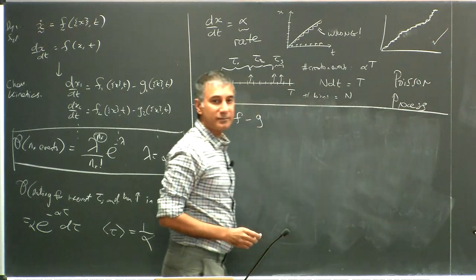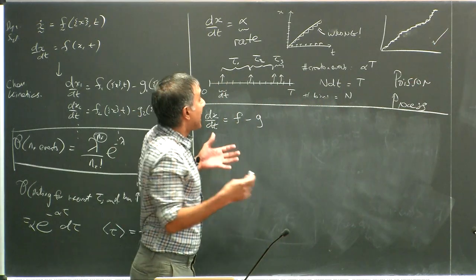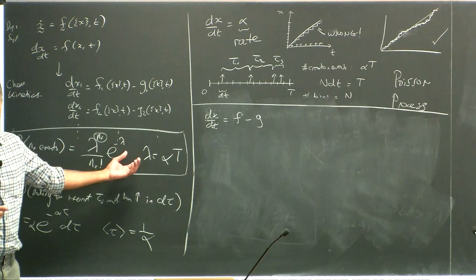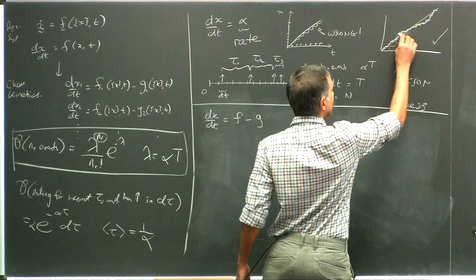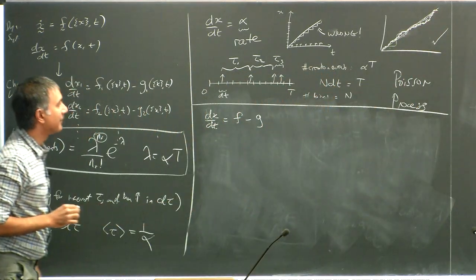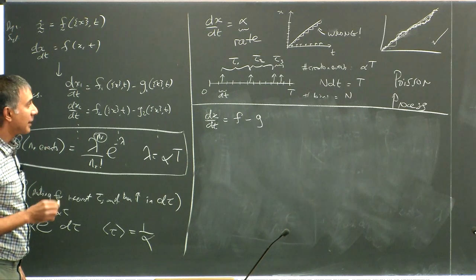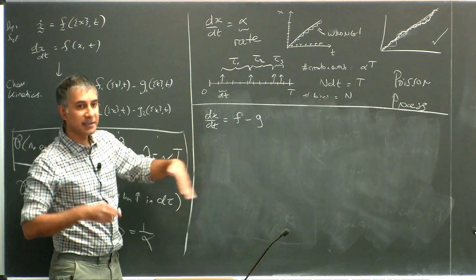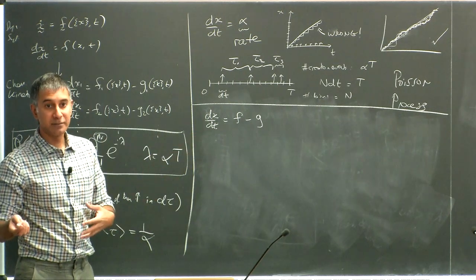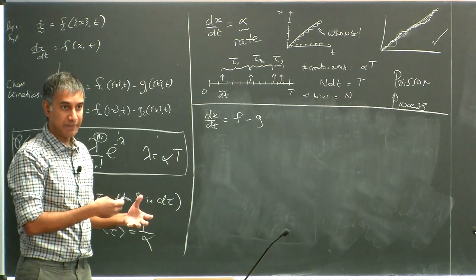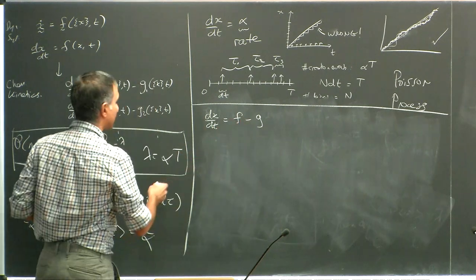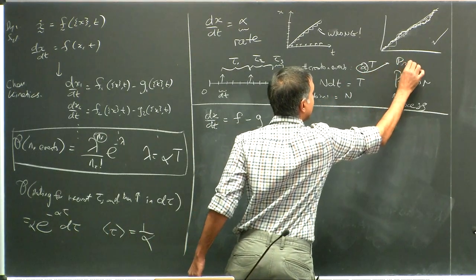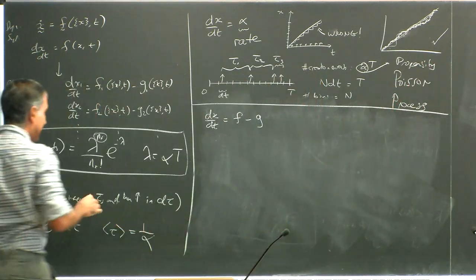You could ask whether on average this thing still goes through the same straight line. The answer is yes, because the expectation value will always match — if you repeat this experiment many times, these curves are all going to track the same straight line. That's what chemical kinetics always looks like. Now we're going to add a destruction process alongside the creation process, and simply ask what happens.